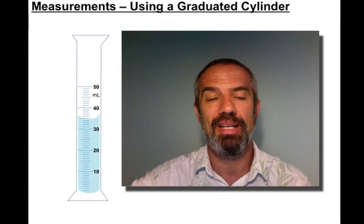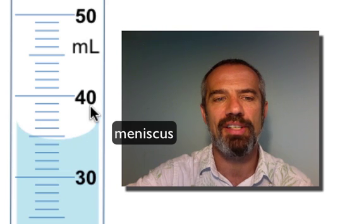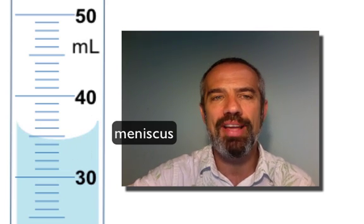The liquid kind of curls up on the sides. That's because water, and we usually measure out water or solutions in which water is a solvent in graduated cylinders, is rather attracted to glass. So it tends to pull up on the sides as it attracts to that glass and create something called a meniscus.